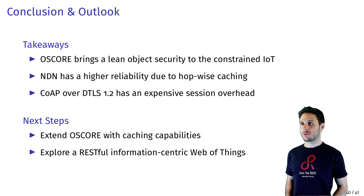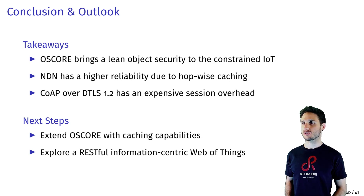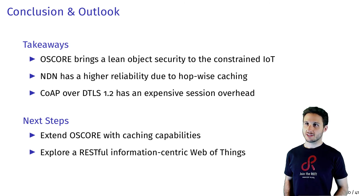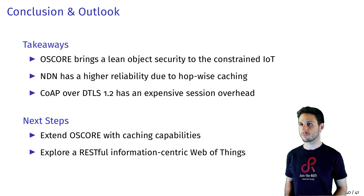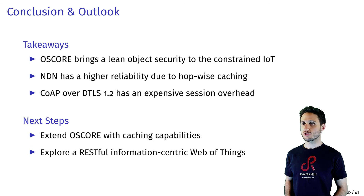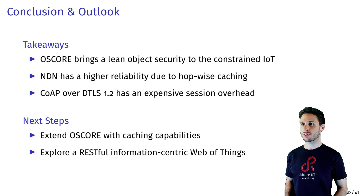We highlight three takeaways from our comparative performance study. First, OSCORE brings lean object security to the constrained IoT by leveraging CoAP protocol features, showing a smaller header footprint than CoAP over DTLS. Second, NDN shows higher reliability than the other deployments due to hop-wise content caching. Third, CoAP over DTLS shows expensive session overhead, especially when session state is frequently changed. For future work, we plan to extend OSCORE with caching capabilities and build a reliable, RESTful information-centric web of things by reusing the hop-wise forwarding and retransmission features of NDN in OSCORE.